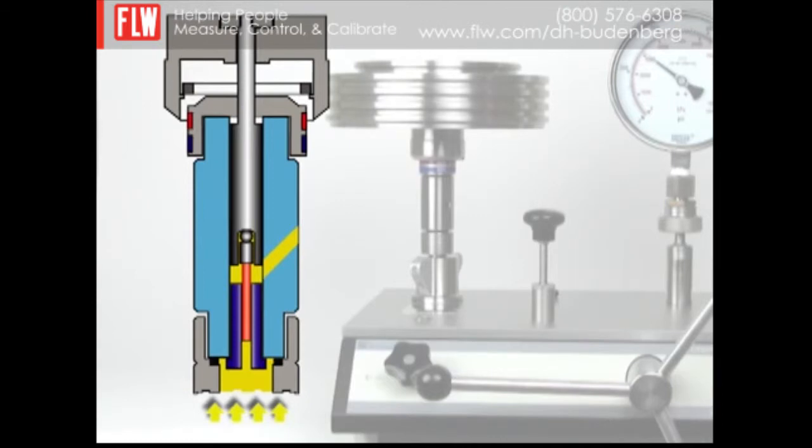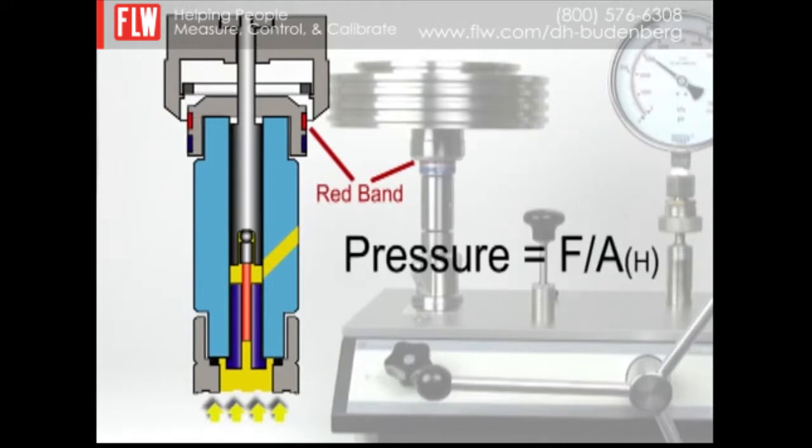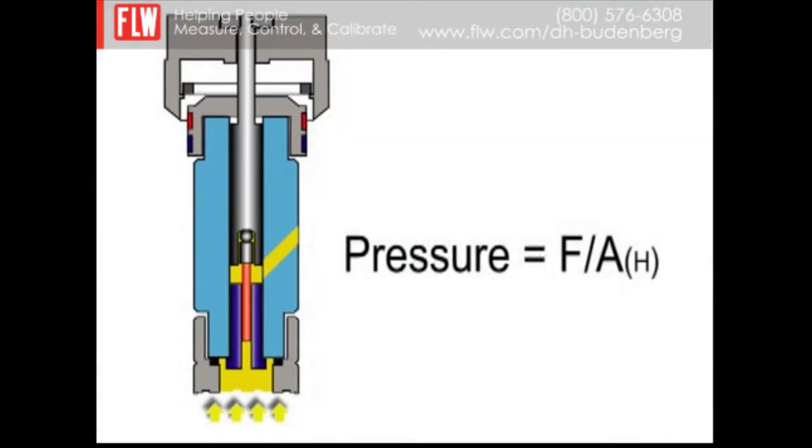With the masses floating within the red band, a second equilibrium is achieved and the pressure generated is equal to the force created by the masses divided by the effective area of the high pressure piston.